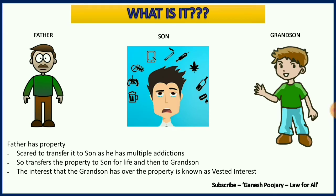Now, a few important factors to note. First, there is a transfer of property — the father is transferring the property to the son for life and then to the grandson with absolute interest. The grandson will get absolute right over the property after his father dies. Till then, he will have vested interest only and has to wait for possession. That is one important aspect.